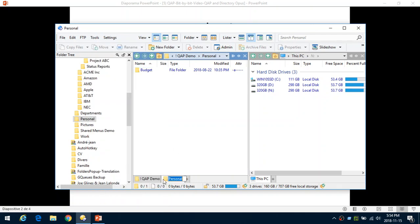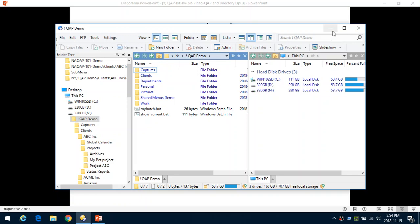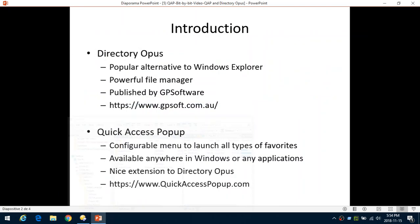It's not freeware — you have to buy it — but there is a trial version that you can use to make sure you like it before committing. It's developed by three developers in Australia. Their company is named JP Software and you can download it at gpsoft.com.au.